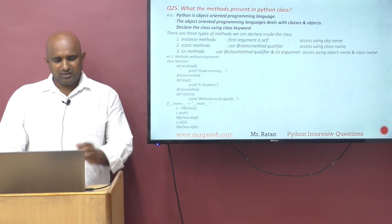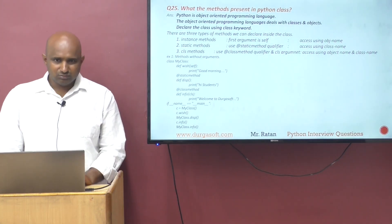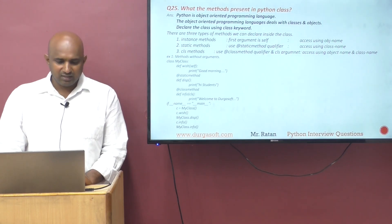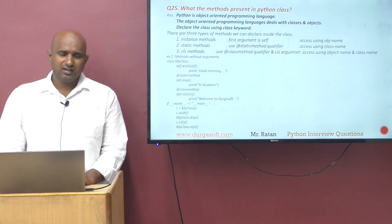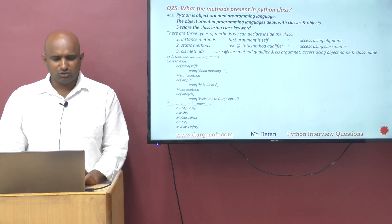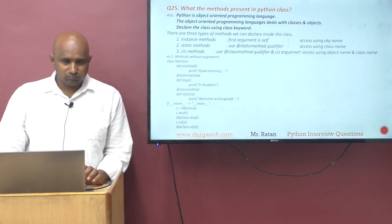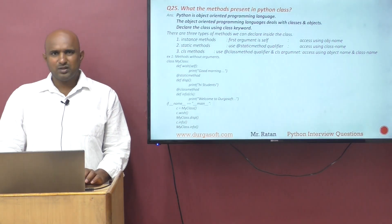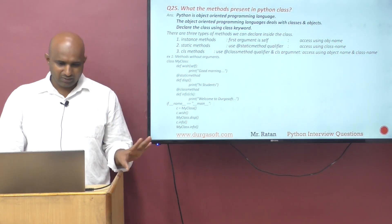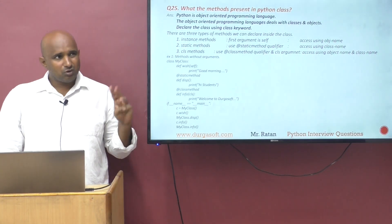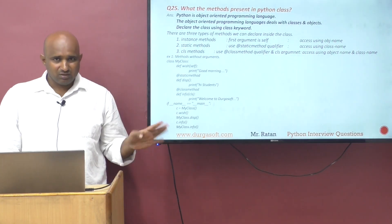You can also define one more method — abstract method. So there are three or four types of methods: instance method, static method, class method, and abstract method.